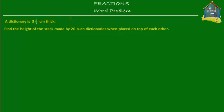Welcome to homecampus.com.sg. Here's a word problem for you. A dictionary is 3 and 1/3 centimeters thick. Find the height of the stack made by 20 such dictionaries when placed on top of each other. So the dictionary has a thickness of 3 and 1/3 centimeters.